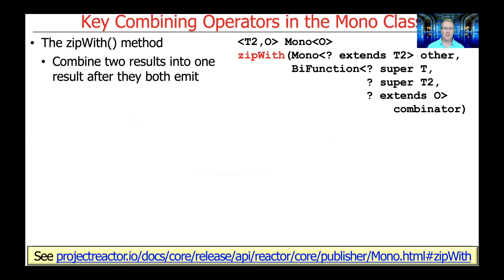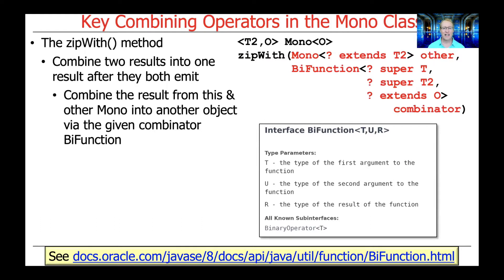We'll start with the ZipWith method. This method is used to combine two results into one result after both of the two results emit. It takes two parameters: the first parameter is a second Mono, which we call Other, and the second parameter is a combinator function. What this combinator function does is it combines the results from this Mono and the Other Mono to create a new object. The combinator is a function interface defined in the Java 8 spec used to combine two operations together and return a result.